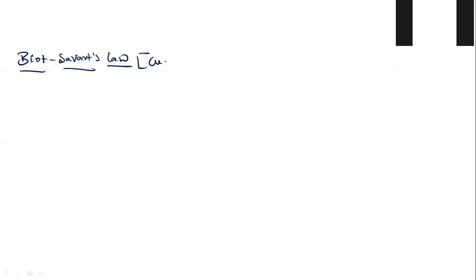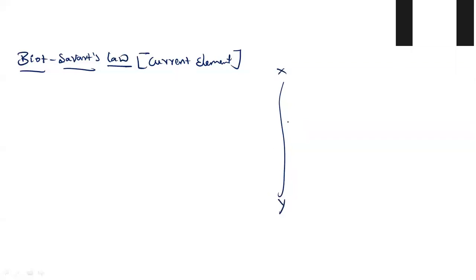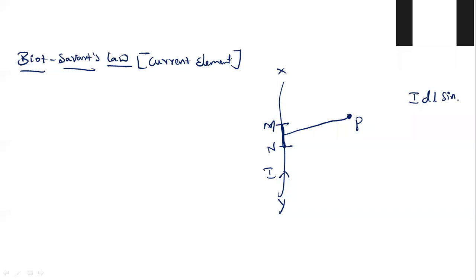Next, go through Biot-Savart's law — it is an important three-mark question. You must remember the term current element. Biot-Savart's law helps us in finding out the magnetic field at a point due to a current element. Suppose XY is a conductor; a small portion of this conductor carrying current is called a current element. According to Biot-Savart's law, the magnetic field is proportional to IDL sin theta divided by R square.